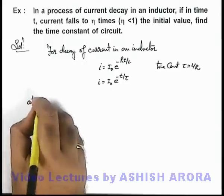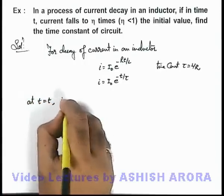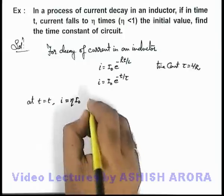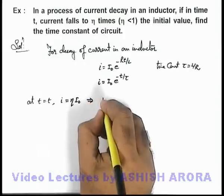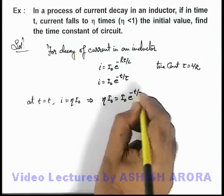And we are given that at t equal to t, the current decreases to ηi₀, as it is given η is less than 1. This implies if we substitute the value, it is ηi₀ equals i₀e to the power minus t by τ.